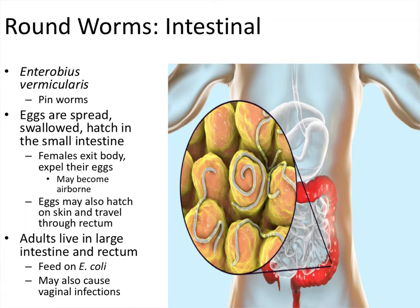The eggs are swallowed and hatch in the small intestine. The females will then exit the body and expel their eggs, oftentimes with such force that they become airborne, contaminating everything around that person — sheets, other types of bed linens, etc. The eggs can also hatch on the skin. Most of the time, eggs are deposited outside the body and someone else picks them up on their hands, gets them in their mouth, and then develops a case of pinworms. But occasionally, especially when someone is sharing a bed, the eggs can get onto their skin, hatch, and then crawl through the rectum up into the large intestine.